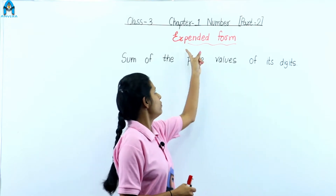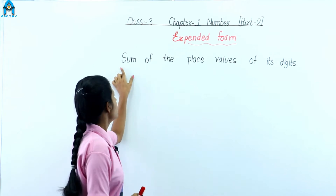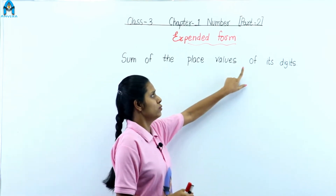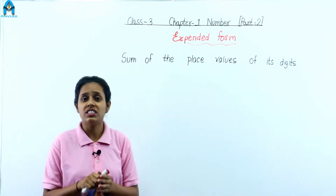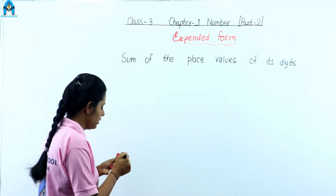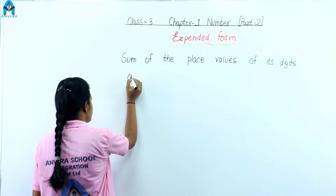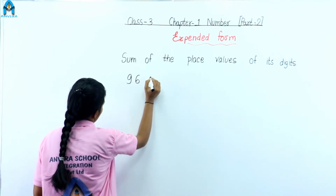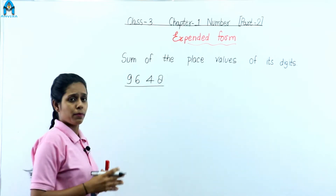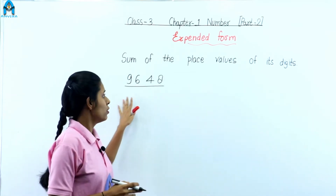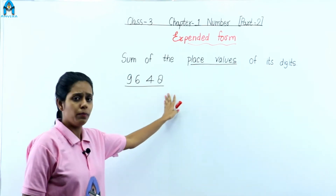Our first topic is expanded form. What is expanded form? It is the sum of the place values of its digits. Let's take an example to understand this. Here I write a four digit number, 9,642. First, we need to find the place values for this number.